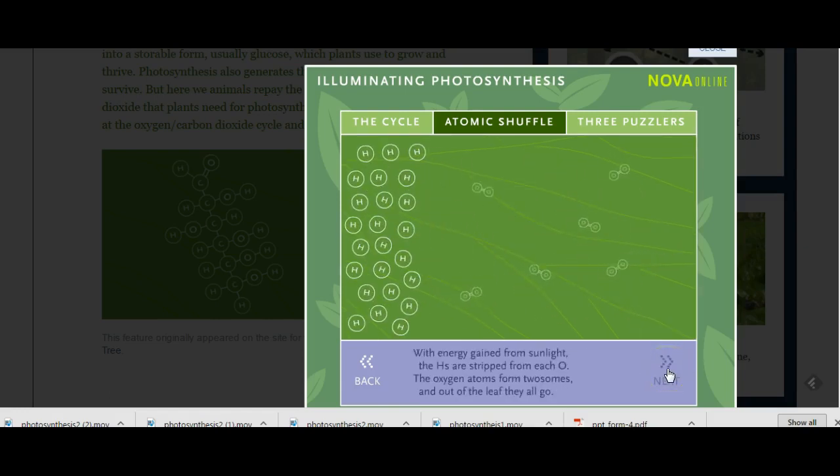Now notice that when that happens, those hydrogens and oxygen were pulled apart. Did you see what those oxygens did? I'm going to replay that. The oxygens joined to each other and they went out of the plant. One of the things we know that photosynthesis makes is oxygen.